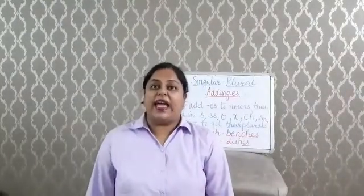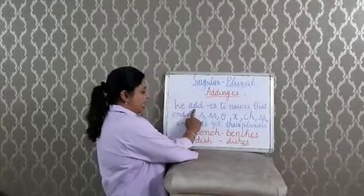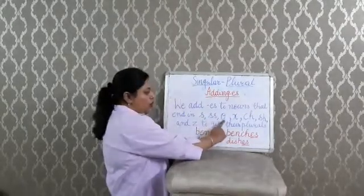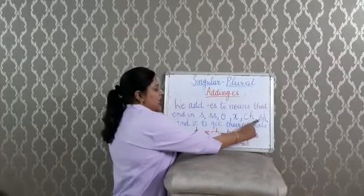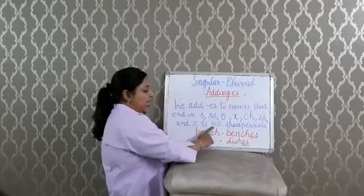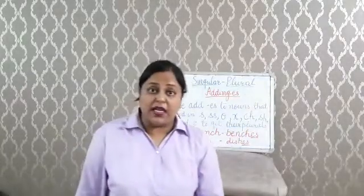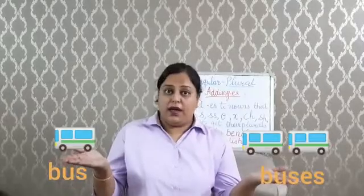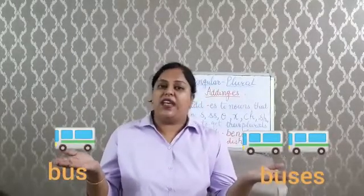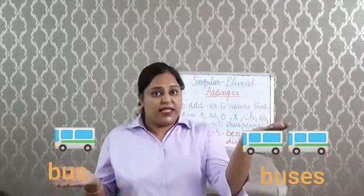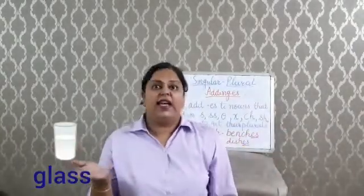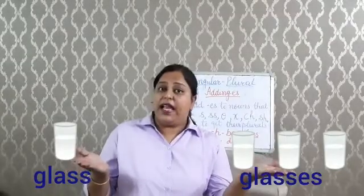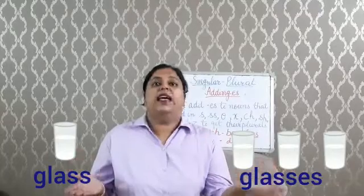Now let's understand adding 'es'. We add 'es' to nouns that end in s, double s, o, x, ch, sh, and z to get their plurals. For example, bus ends in 's', so we add 'es' to get buses. The word glass ends in double 's', so we add 'es' for glasses.